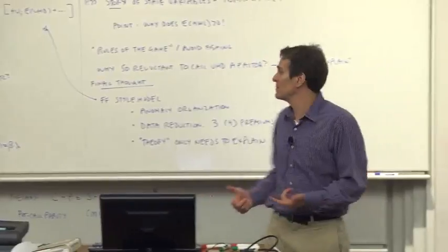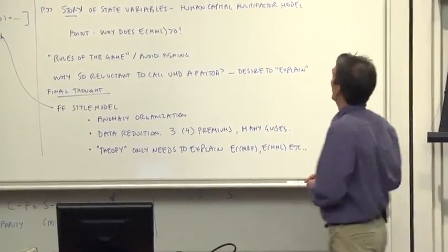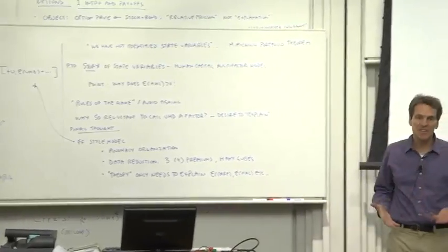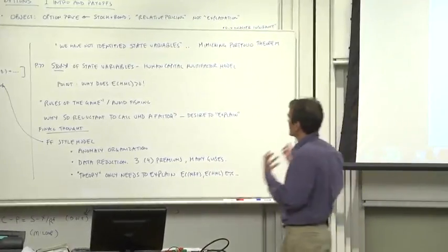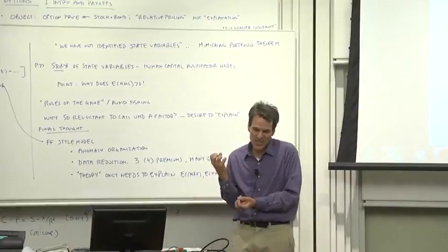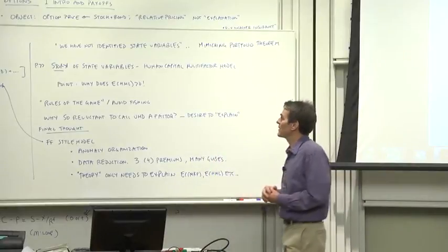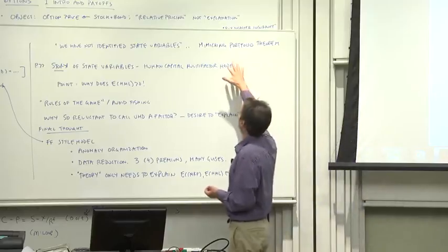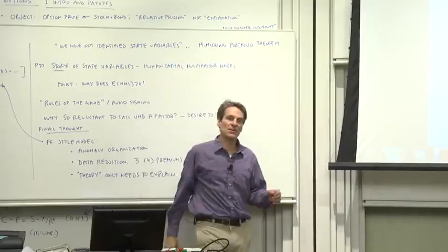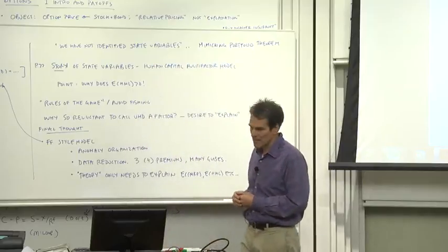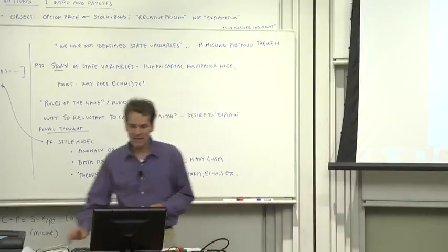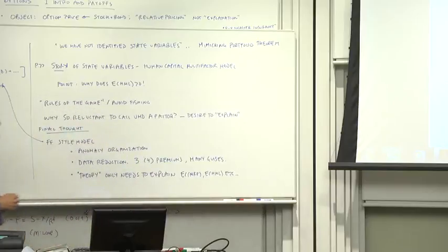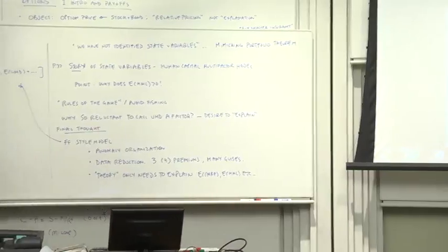We have not identified state variables of special hedging concern to investors that lead to three-factor pricing. Those are important words. What are they referring to here? They're referring to the theorems that we talked about, the mimicking portfolio theorem. We saw if there's an APT, if there's an ICAPM, if there's a multi-factor model, then we could always represent those models in terms of those mimicking portfolios. Aha, they would like their HML and SMB to be mimicking portfolios for state variables of concern to investors. Now, they think they're out there, and lots of subsequent work has tried to link HML to state variables of concern to investors.